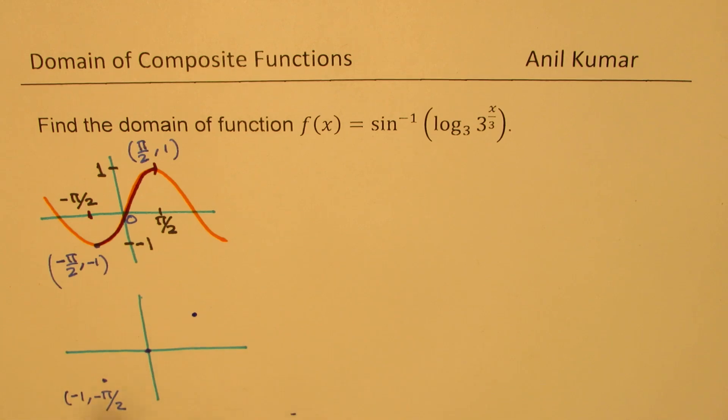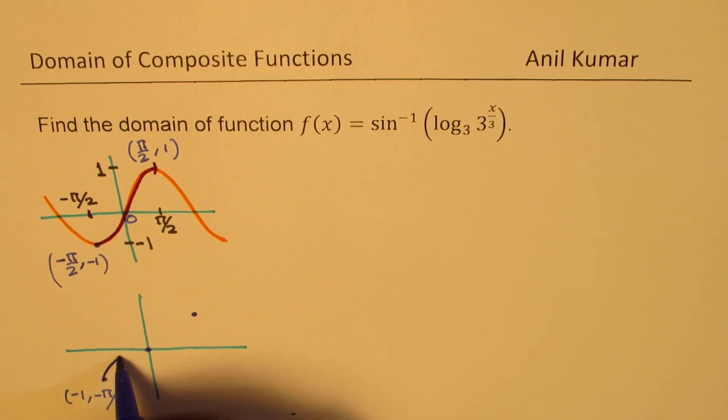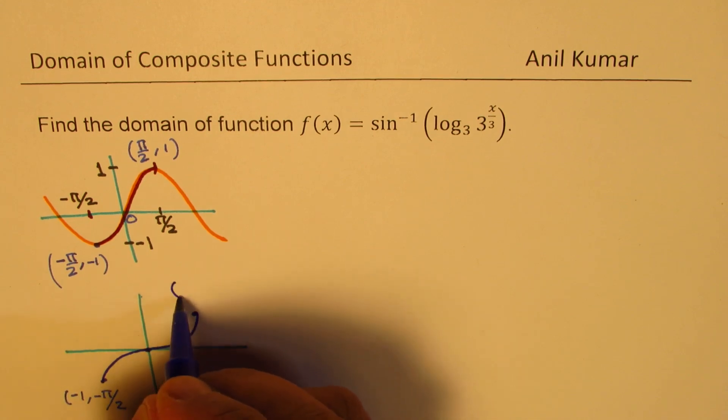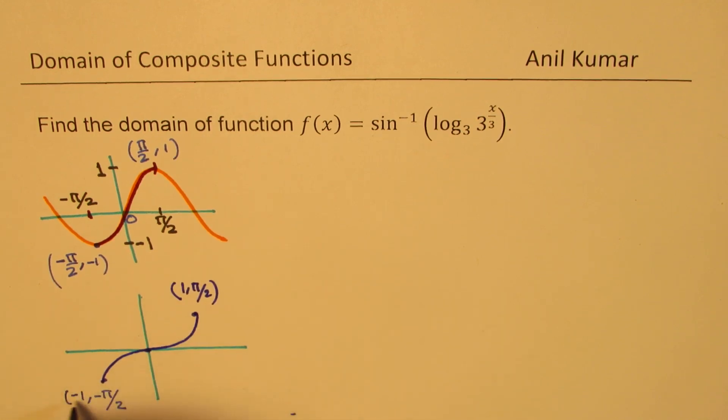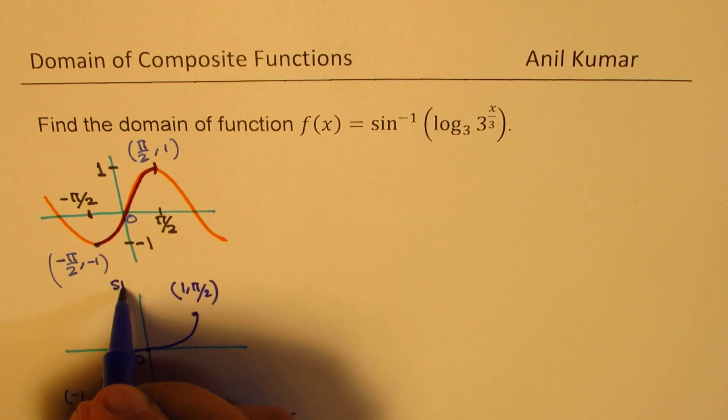So 1 pi by 2, let's say it is here. Connecting these points, we get the inverse of this particular function and it can be graphed as kind of like this, where these points for us now are 1 pi by 2 and this will be minus 1 pi by 2.